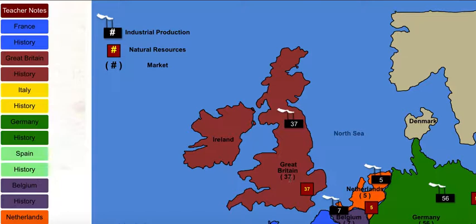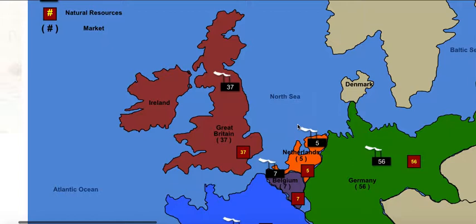The domestic markets and domestic natural resources shown here are not going to change. But the factories — the amount of production that can be produced in each country — will go up as they roll for technology, and those numbers will increase in the little factory icons. As you can see, we have all our European countries involved; there are eight of them in this simulation.